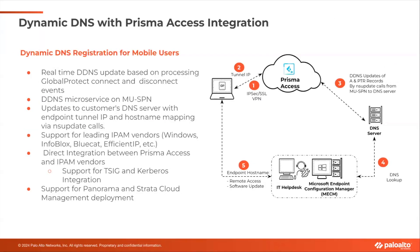Here's a high-level overview of how this feature works. When GP establishes the IPsec VPN tunnel and the tunnel is up, Prisma Access will assign a client IP to the VPN interface. At the same time, there is a microservice running in Prisma Access. With the configuration — which I'll show in the demo — the microservice will update the A and PTR records to the customer's in-house DNS server.